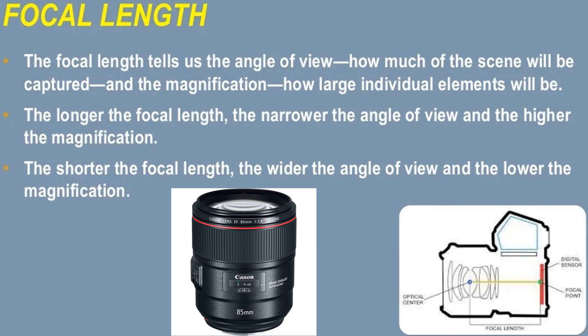Focal length tells us both the angle of view — how much of the scene will be captured — and the magnification — how large individual elements will be. The longer the focal length, the narrower the angle of view and the higher the magnification. The shorter the focal length, the wider the angle of view and the lower the magnification.